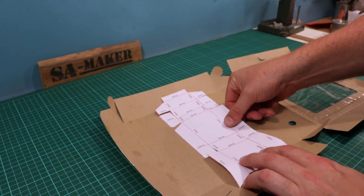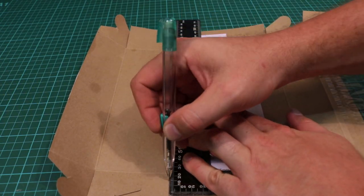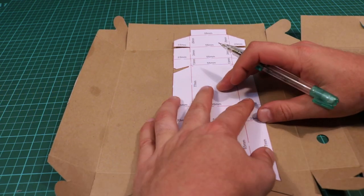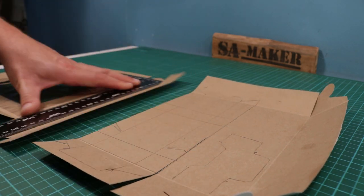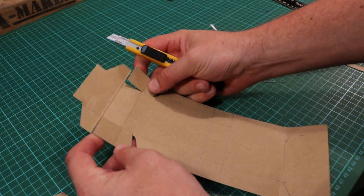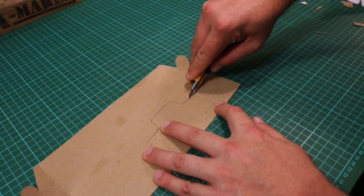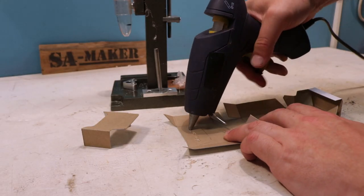Trace on it the pattern of the case. Cut out the pattern. Fold the case and hot glue it together.